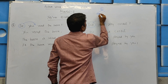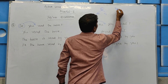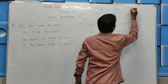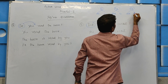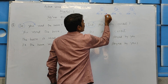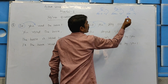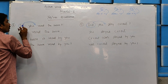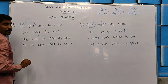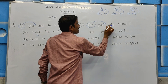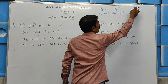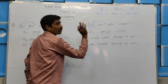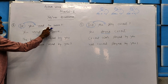V1 equals Do plus V1. Does plus V1. Did plus Verb 2. Verb 2. Did plus V1. Do plus V1. Does plus V1. Did plus V1. Verb 2.